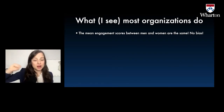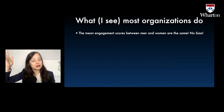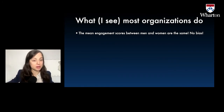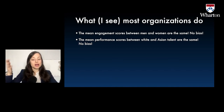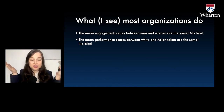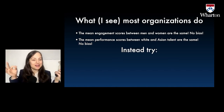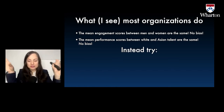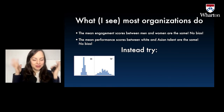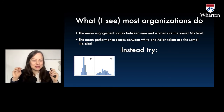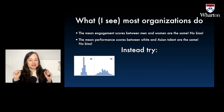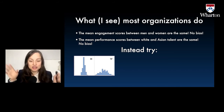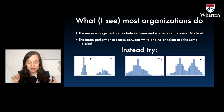I often see companies do things like this: they say, the mean engagement scores between men and women are the same — there must be no bias. The mean performance scores between white and Asian talent are the same — no bias. Instead, try — and hold onto your hats, this is very sophisticated — a histogram. I study and teach and practice data science, but the strongest value add I think I give to companies is a histogram, in addition to complaining about data.